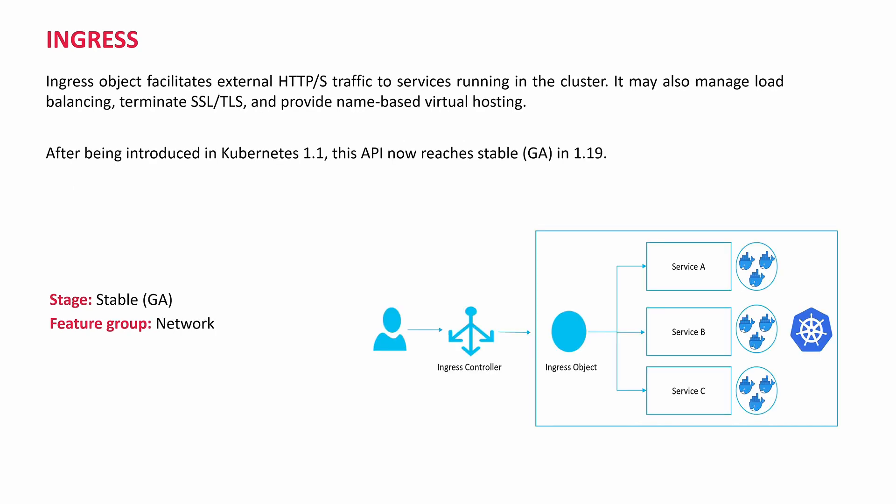Ingress — we all know the Ingress object. It allows external HTTP and HTTPS traffic to services running in the cluster. It also manages load balancing, terminates SSL, and provides name-based virtual hosting. It was introduced in version 1.1. Now, the API reaches stable in 1.19. Feature group: Networking. Stable.